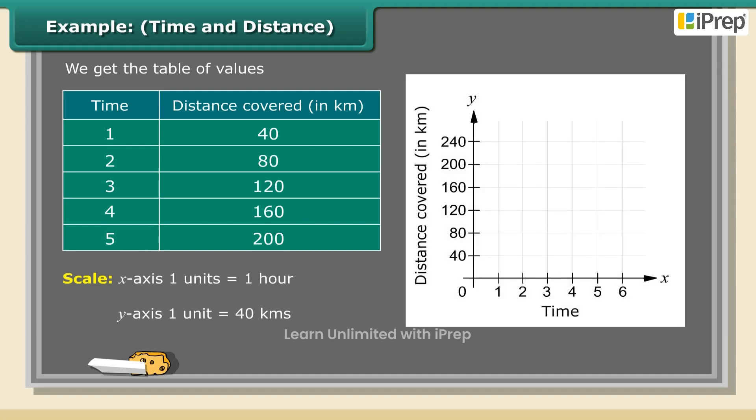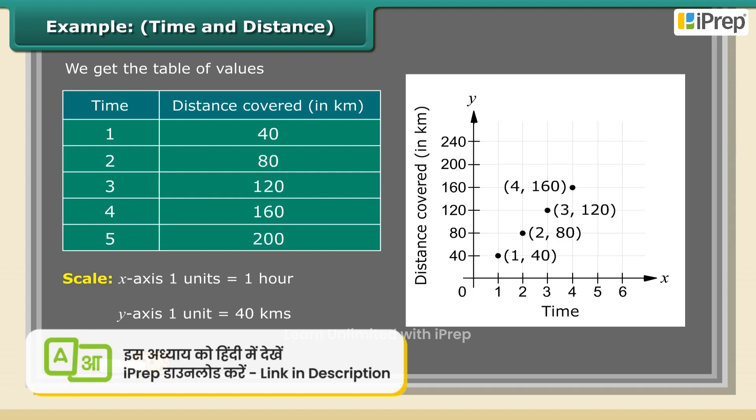Mark distance on the vertical axis. Plot the points: (1, 40), (2, 80), (3, 120), (4, 160), (5, 200). Join the points.